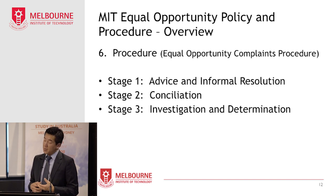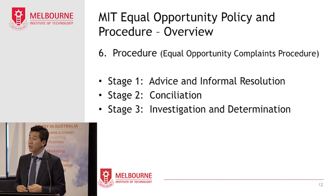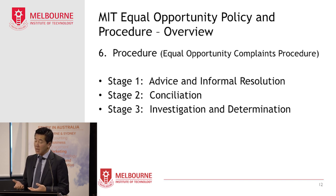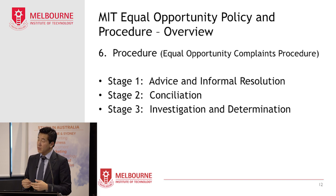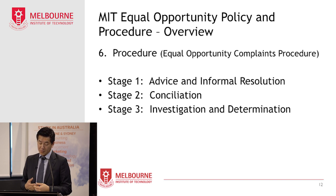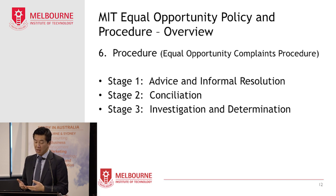If a complaint can't be resolved by conciliation, you can request for it to proceed to stage three. Stage three involves lodging a written complaint with a request for investigation to the managing director of the Institute. The managing director will decide whether to refer the matter for investigation or take other appropriate action. If referred for investigation, the managing director appoints an investigator to carry out the investigation. The investigator then reports back, and the managing director makes a formal determination on the complaint — including a finding on whether the complaint is substantiated and what appropriate action to take.